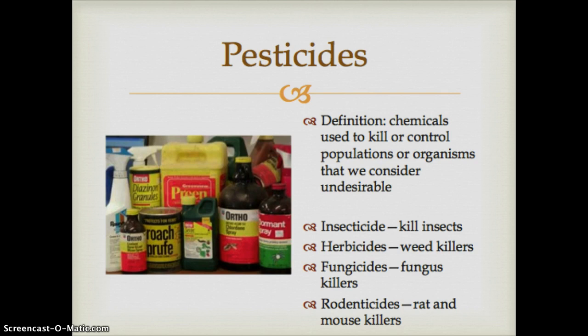So how do we get rid of these pests? We use pesticides. Pesticides are any chemicals used to kill or control populations of organisms that we decide are undesirable — and it's really humans deciding that. These can break into many different categories. The overall umbrella term is pesticides, but then you can separate those into insecticides, herbicides, fungicides, and rodenticides.